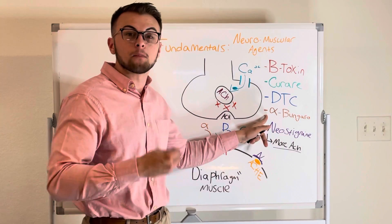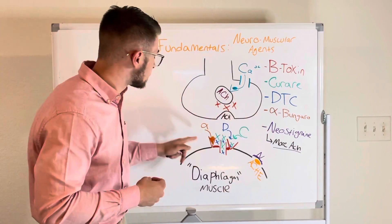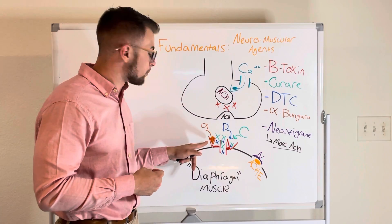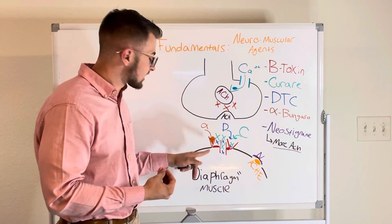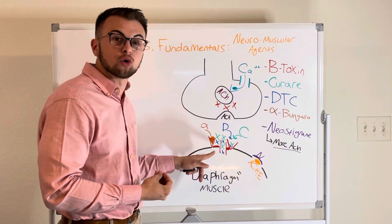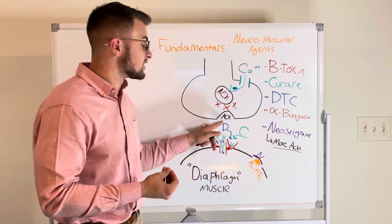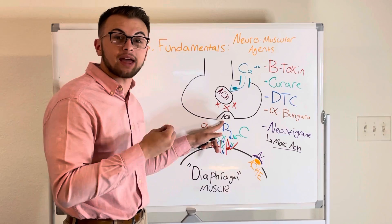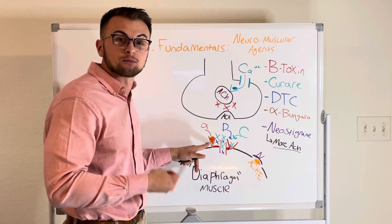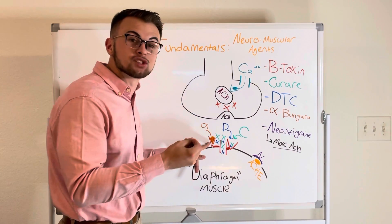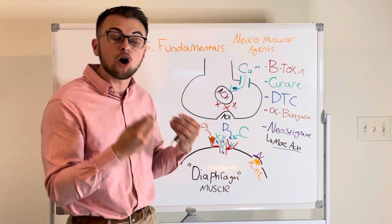Lastly, we have alpha-bungarotoxin. This toxin undergoes irreversible binding with our nicotinic acetylcholine receptors. This means that acetylcholine will never be able to bind to this receptor again and will have to wait until a new receptor is formed.